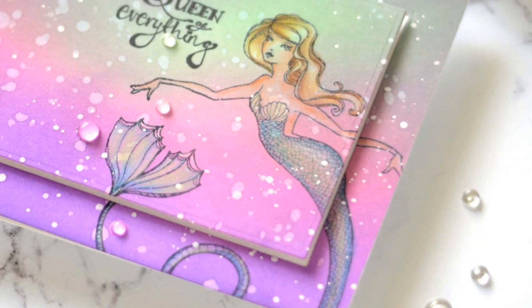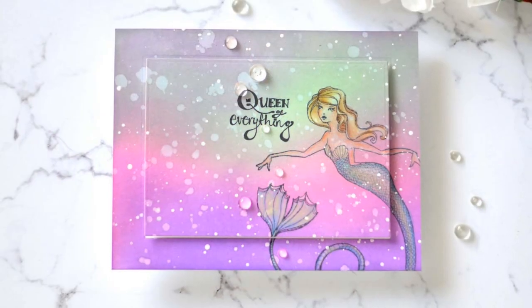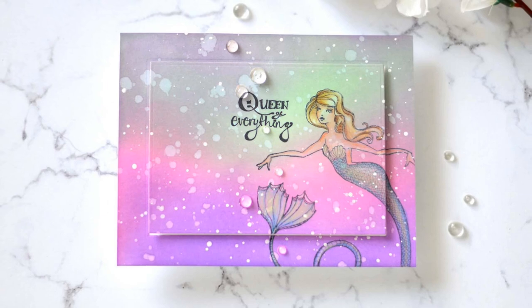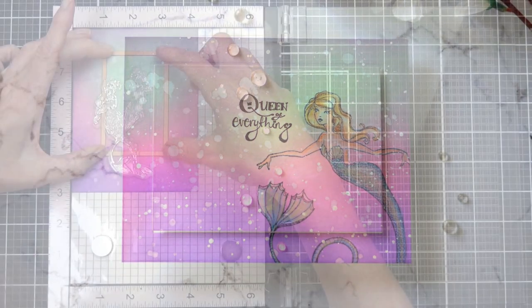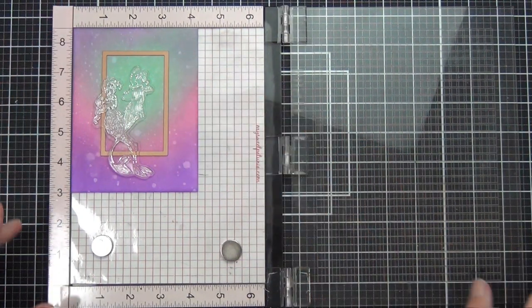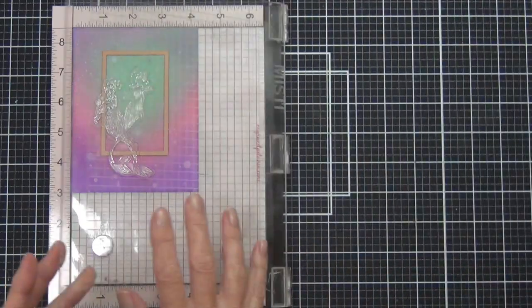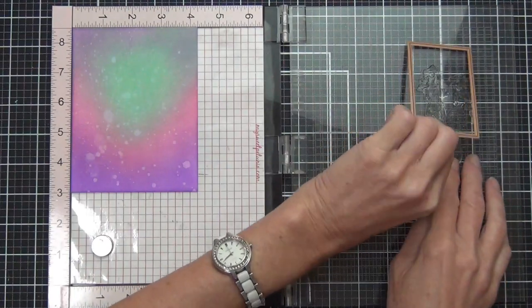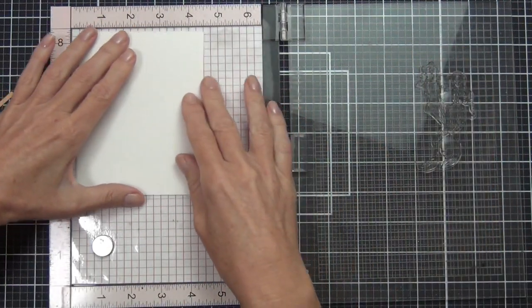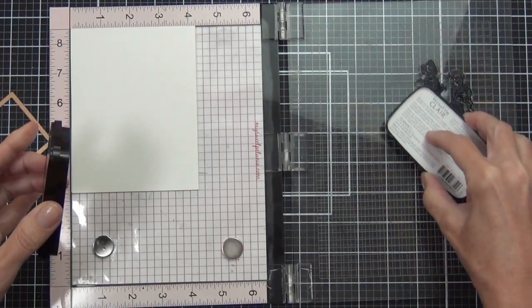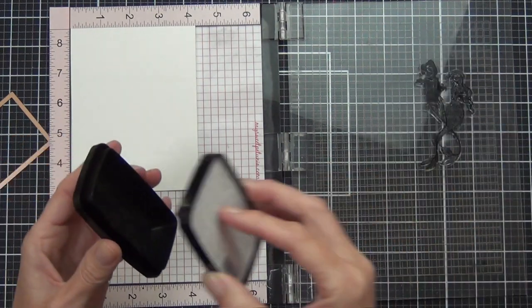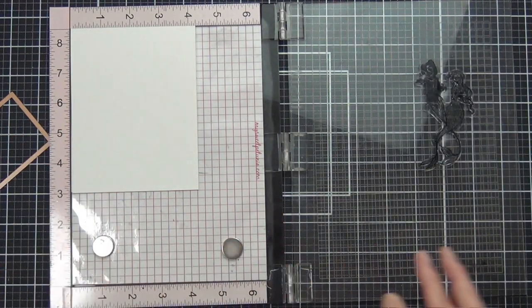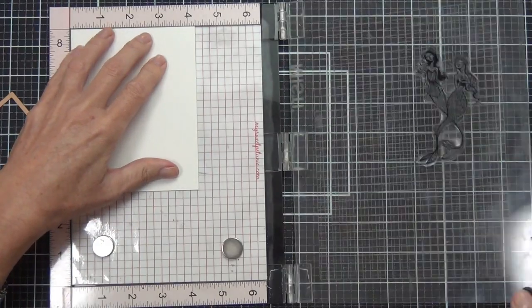My second mermaid image comes from a set called Singing Mermaids. There's two different images in this set, they're both really sweet. I created the same kind of background with my distress oxide inks and now I'm stamping the image directly onto my card front, so this is a top fold portrait style card.